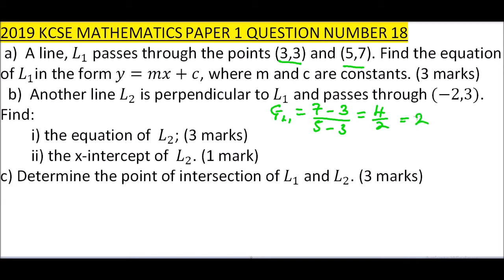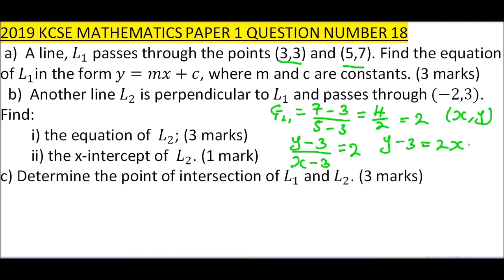Now that we have the gradient and two points, we choose an imaginary point with coordinates (x, y) and say (y − 3) / (x − 3) = 2. Cross multiplying gives y − 3 = 2x − 6, so y = 2x − 3. That is the equation of line L1.